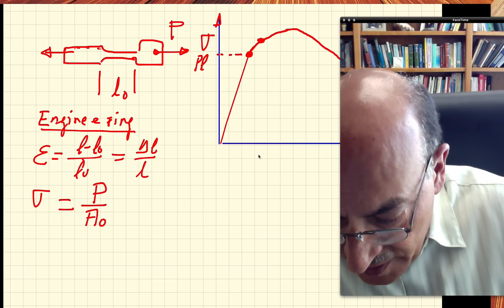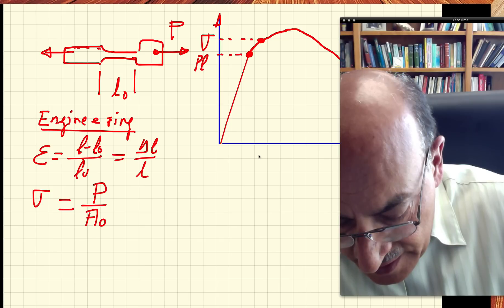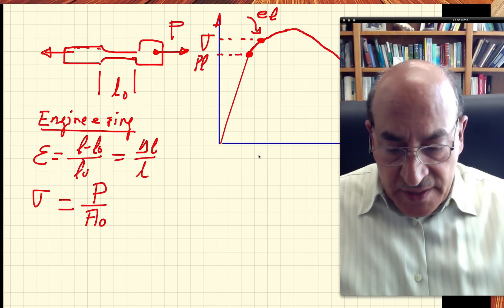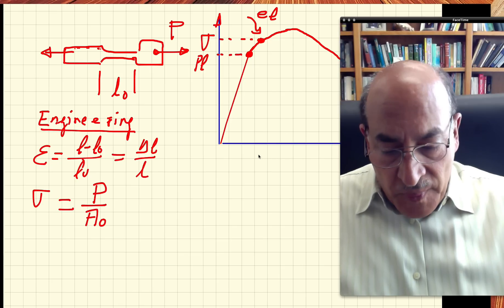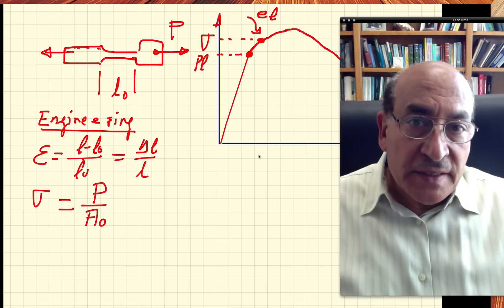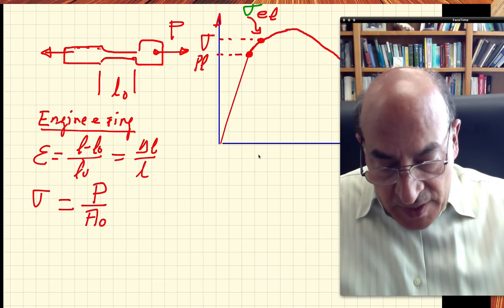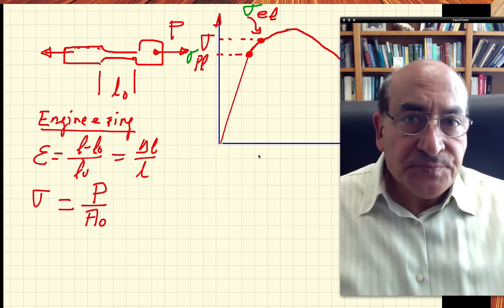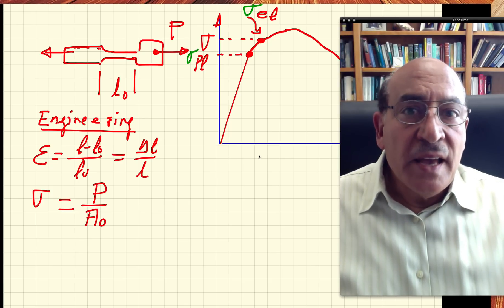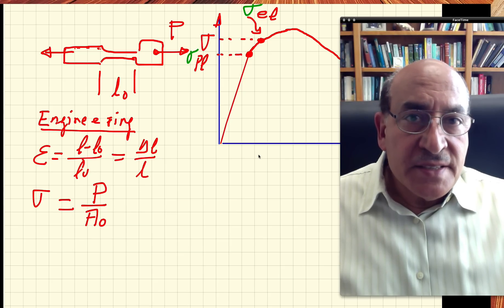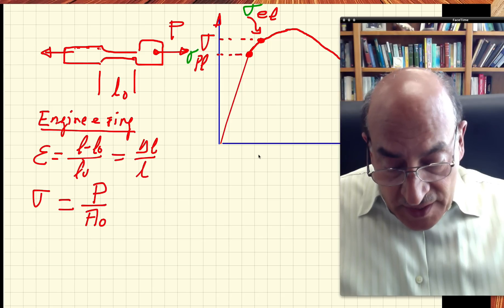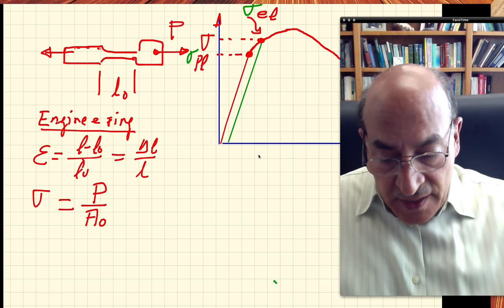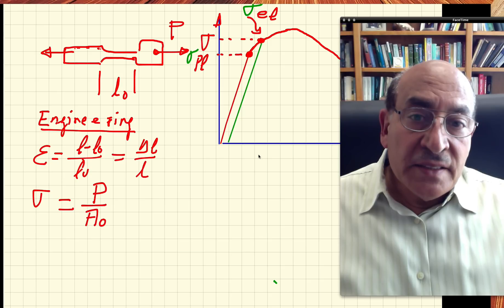After the proportional limit, there is another point called the elastic limit (EL). By definition, if we unload the material at the stress corresponding to the elastic limit — σ_el — the unloading follows a straight line parallel to the original elastic line. σ_pl marks the transition from proportionality to nonlinearity, while σ_el is the point at which elasticity ceases to describe the material.